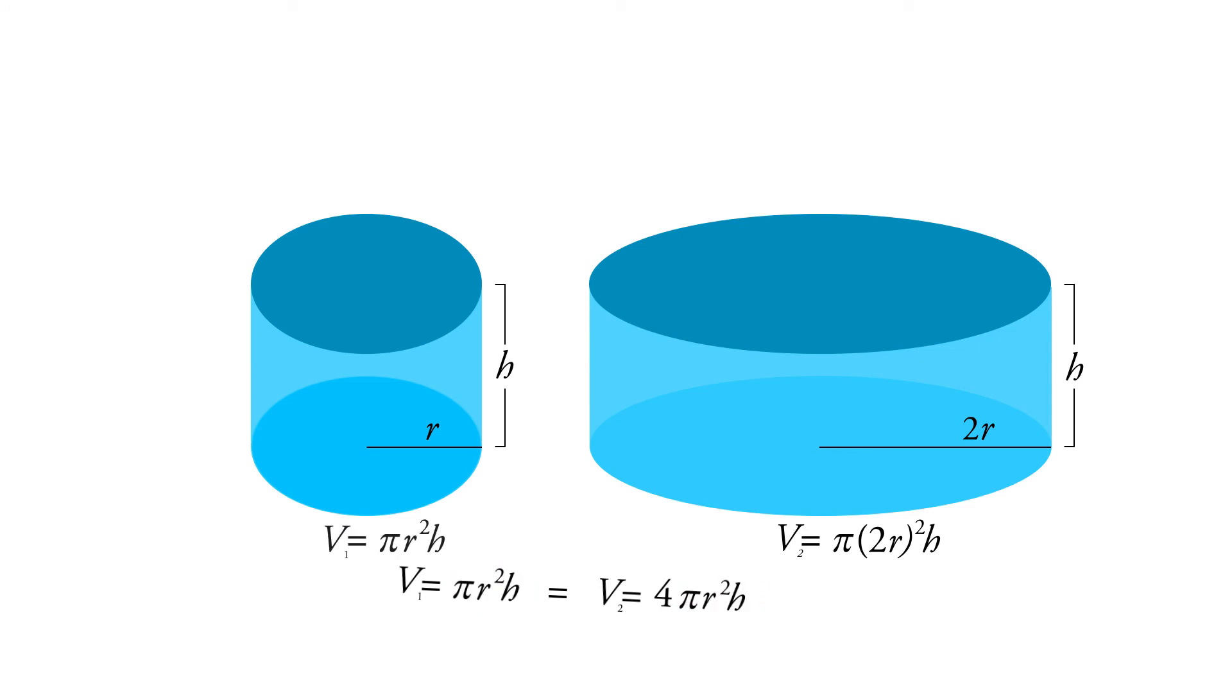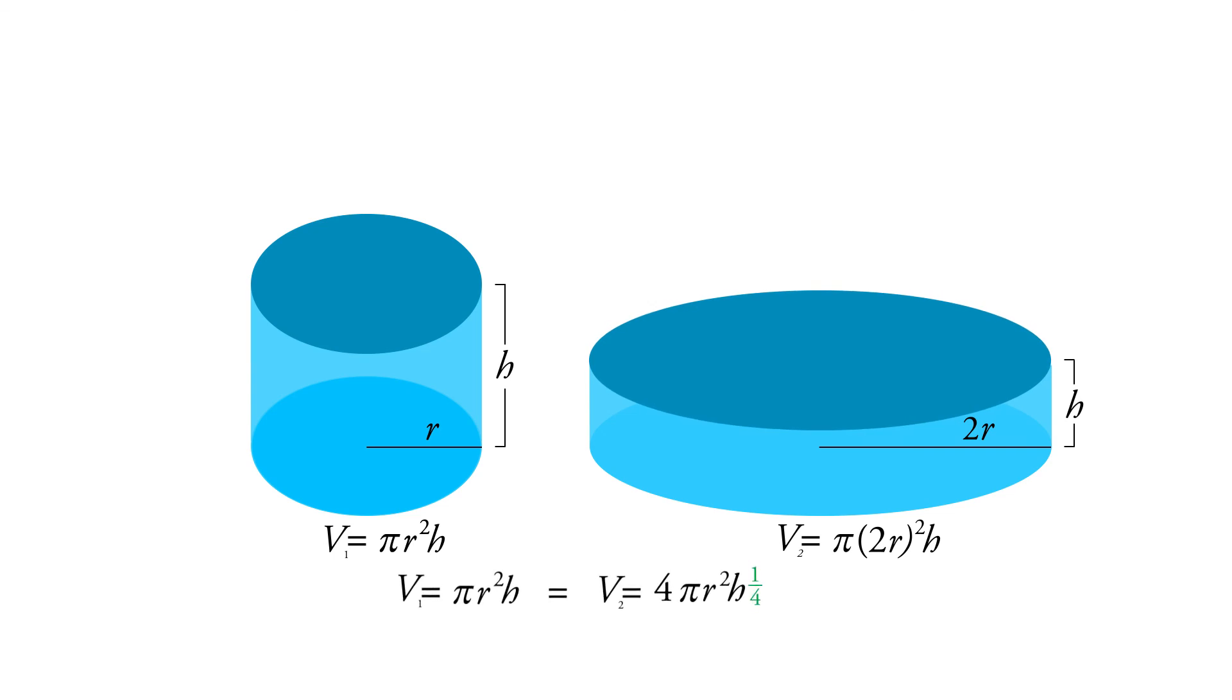So if we kept the height the same, then we wind up with 4 times the volume. So in order to keep the volume the same, we need to reduce the height, and we need to do it by the inverse of that 4. We need to multiply the height by 1 fourth.